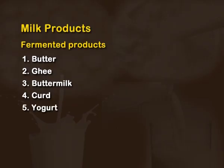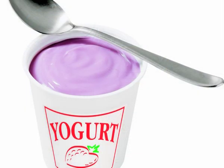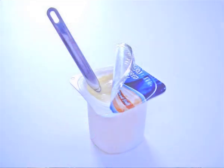Yogurt is a variety of curd more popular in western cuisine. It differs from curd in that whole milk, low fat, skim milk and even cream may be used, and the bacterial culture is different — it is made up of Streptococcus thermophilus and Lactobacillus acidophilus. This culture is added to pasteurized milk and incubated at a temperature of 42 to 46 degrees.